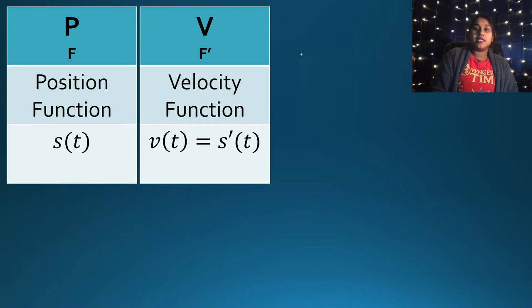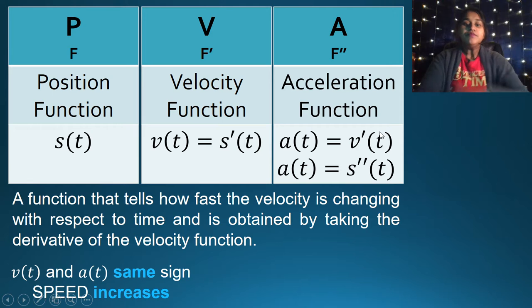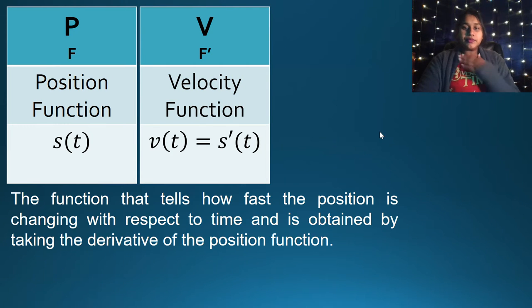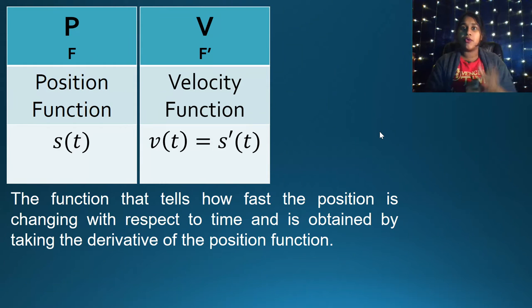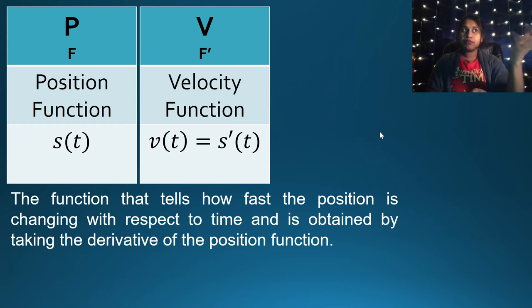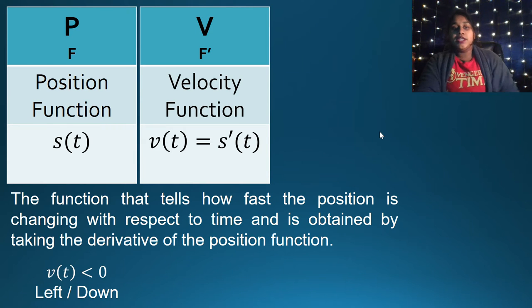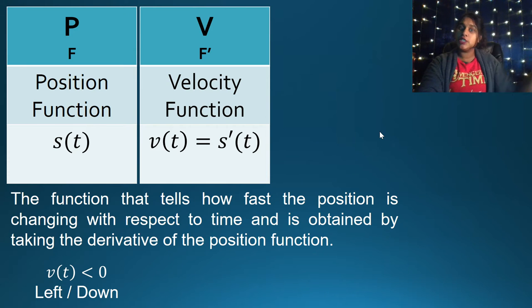Velocity is our first derivative, represented as V of T, but it could also be written as S prime or X prime. Everything we understand about the relationship between F and F prime applies here. If we're looking for a max or min of position, we use the first derivative test. A particle moves to the left or down if velocity is negative, and moves to the right or up if velocity is positive — the same relationships as F and F prime.